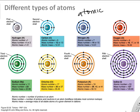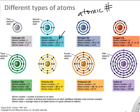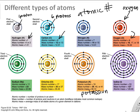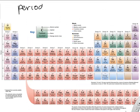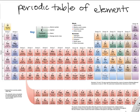Different kinds of atoms have an atomic number, which is based on the number of protons. Hydrogen has one proton and an atomic number of one. Oxygen has eight protons and an atomic number of eight. Different types of atoms have different numbers of protons, neutrons, and electrons, giving them different properties and a different size.